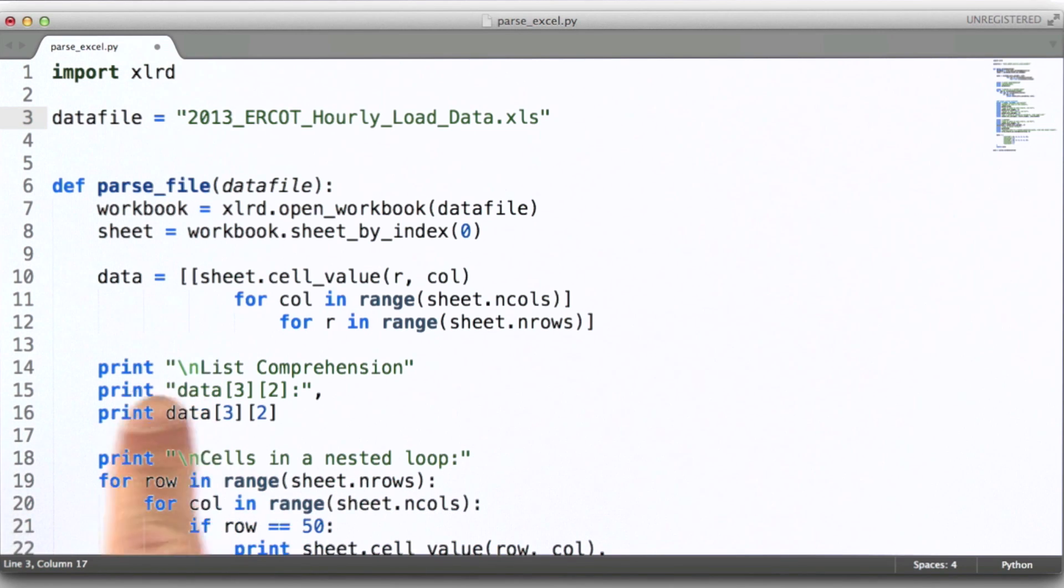What I'm doing here then is simply printing out the value of row three and column two for this list that we've just generated.